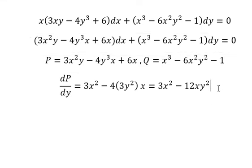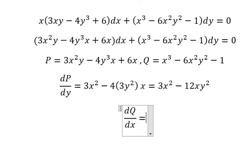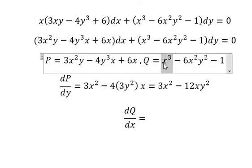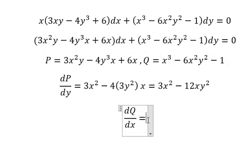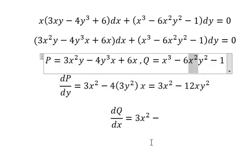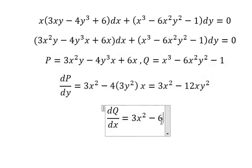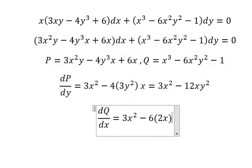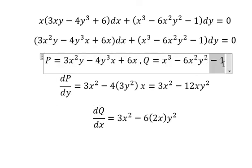Now we have dy, that means we need to take the derivative of Q with respect to x. The derivative of x to the power of 3 gives us 3x squared. This one gives us 2x. This one is a constant, so we get zero.